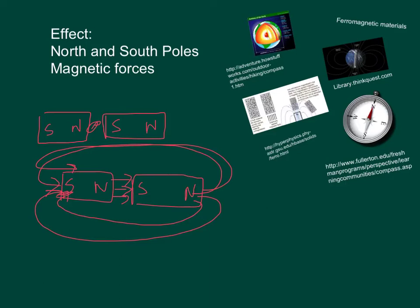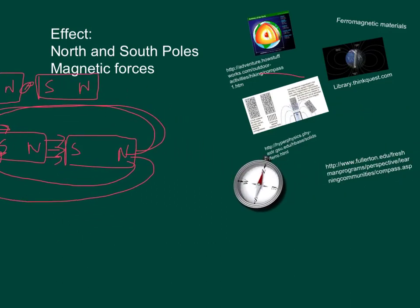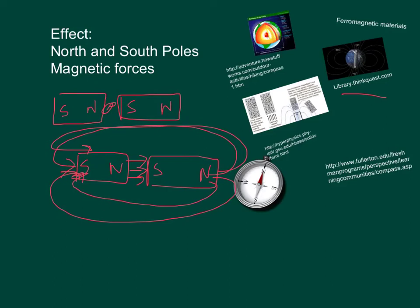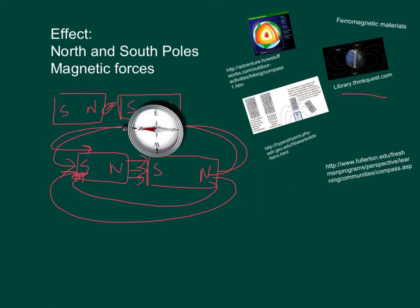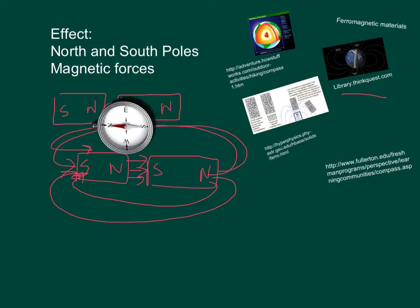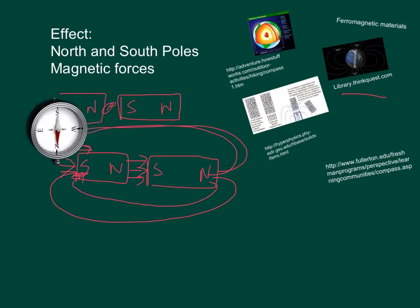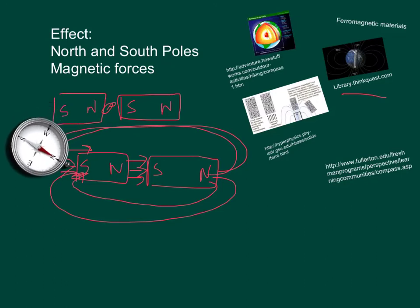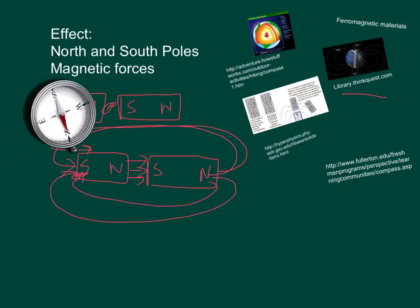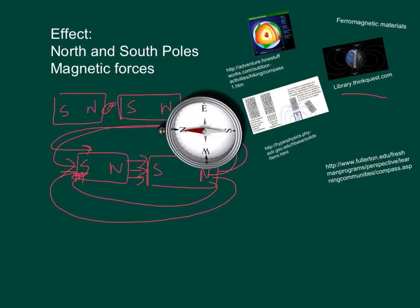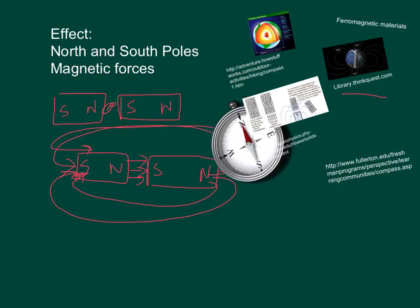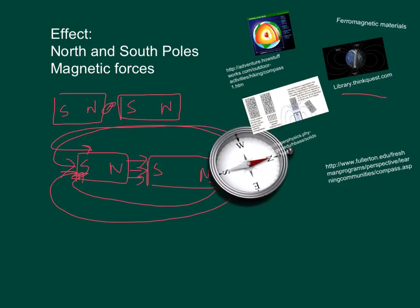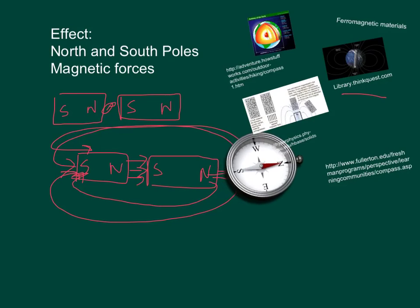So if I were to put a compass out here, it would point in this direction because it is attracted to the south end. The compass is always going to point in the direction of the magnetic field lines. As we go around, it's going to turn and follow those magnetic field lines — and see how the south end of the compass is pointing towards the north end of the magnet. We're actually going to do this when we make our own electromagnets.